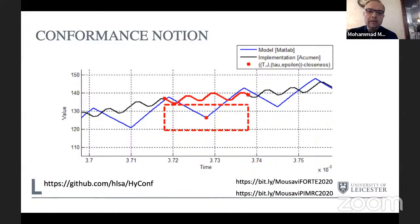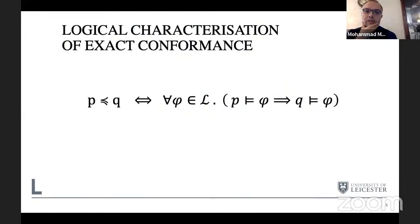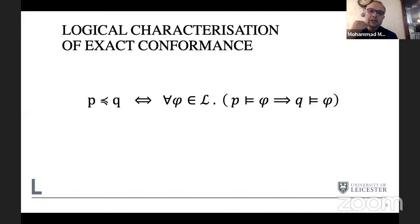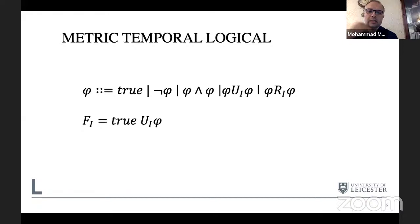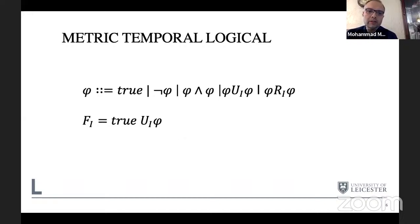This notion has been applied to many examples, including connected and autonomous vehicles. For an exact notion of conformance, logical characterization looks like: fix a logic L, and this logic characterizes your conformance if and only if all properties are preserved and reflected. For an approximate notion, a slightly different type of characterization is needed. The chosen logic, already hinted at in the literature, is metric temporal logic — a variant of temporal logic annotated with intervals specifying when things should happen, supporting box, finally, until, and release operators.